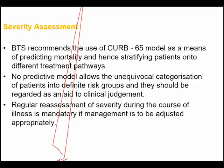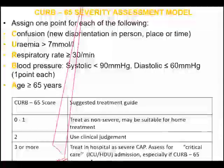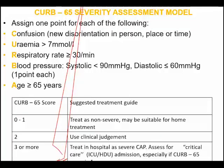Severity assessment is very important. The British Thoracic Society recommends using CURB-65 to stratify patients into groups so that treatment can be directed according to severity — whether mild, moderate, or severe. You assign one point for each criterion in the CURB-65 model.